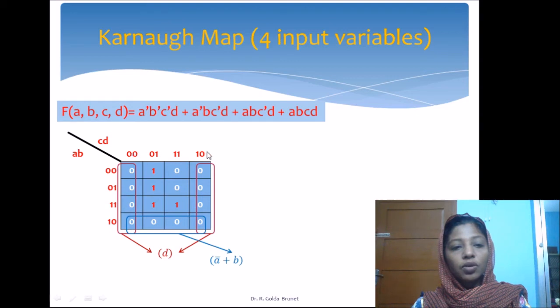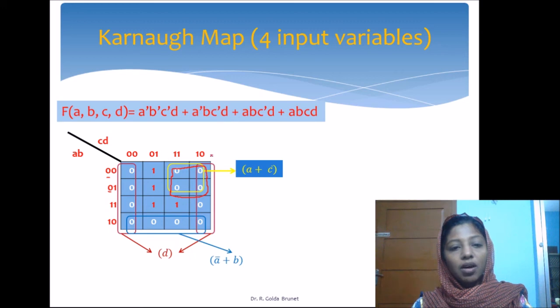Here, along these four columns, c and d are completely varying. Only a and b remain as 1 and 0, so the max term will be ā+b. The leftover zeros are only these two, but we can group these four zeros together. Along these two rows, only a is constant and a takes value zero, so a will appear as a. Along the column, c is one, so we get c̄.